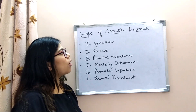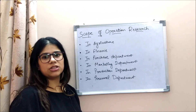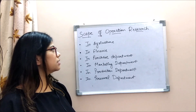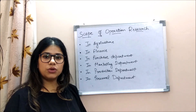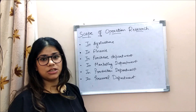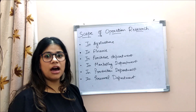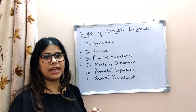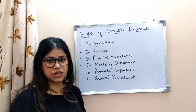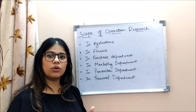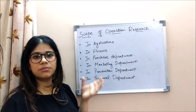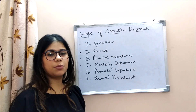Next topic is the scope of Operation Research — the fields where OR is helpful. The first area is agriculture. Due to increasing population and food shortage, OR helps in agriculture by solving problems such as how many crops to grow on limited land, what the allocation should be, and how to optimize the use of water for irrigation purposes.